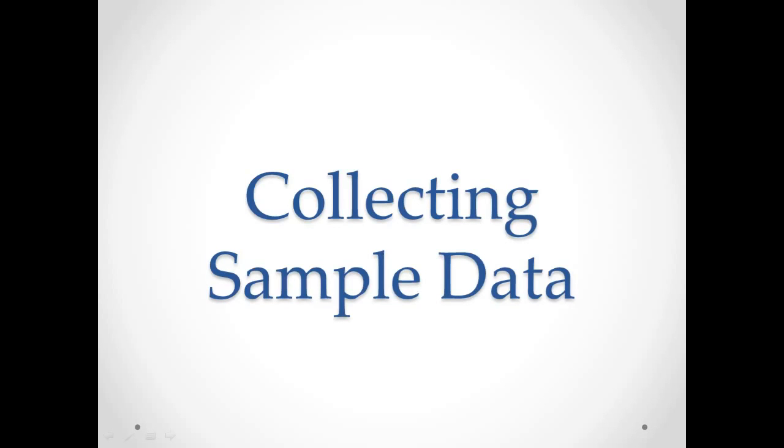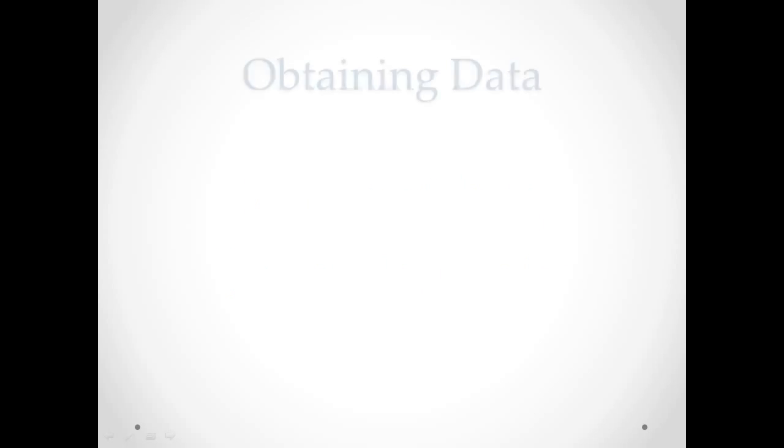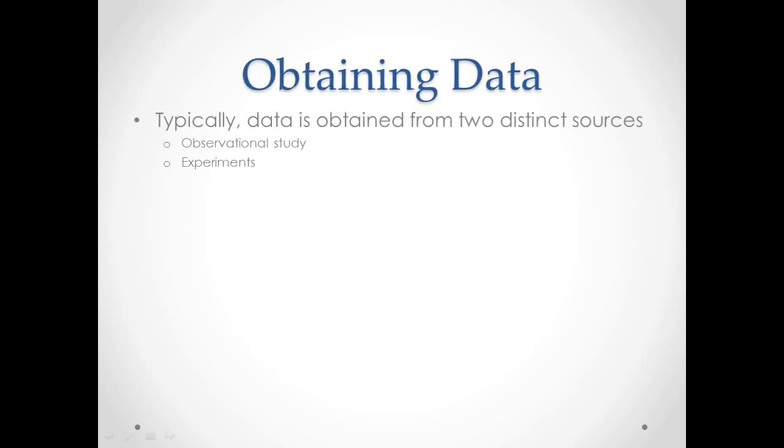Our fifth lesson in chapter one is the collection of sample data. We've talked about all the different types of sample data, and we'll discuss the actual collection and the types of collection that we can do here. Obtaining data is really only done in two specific ways.